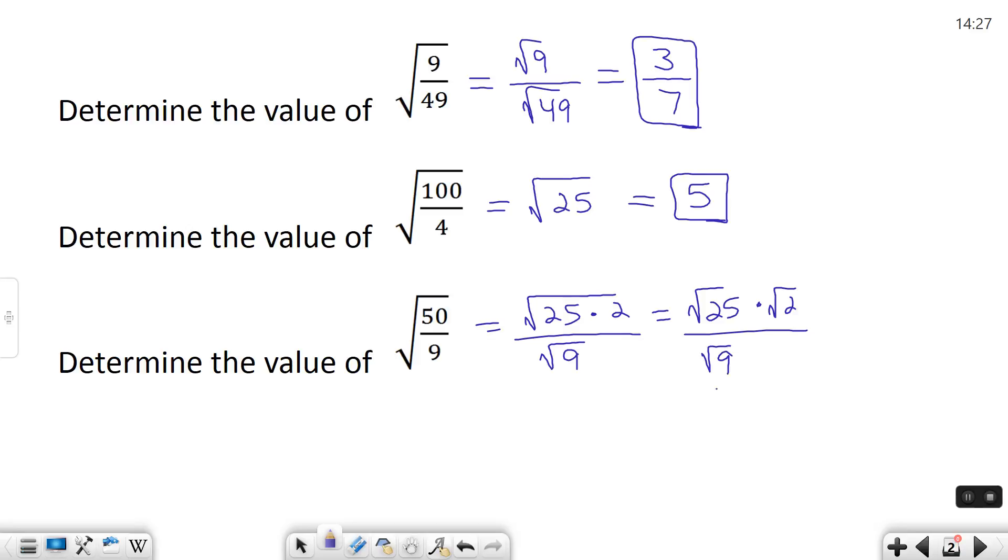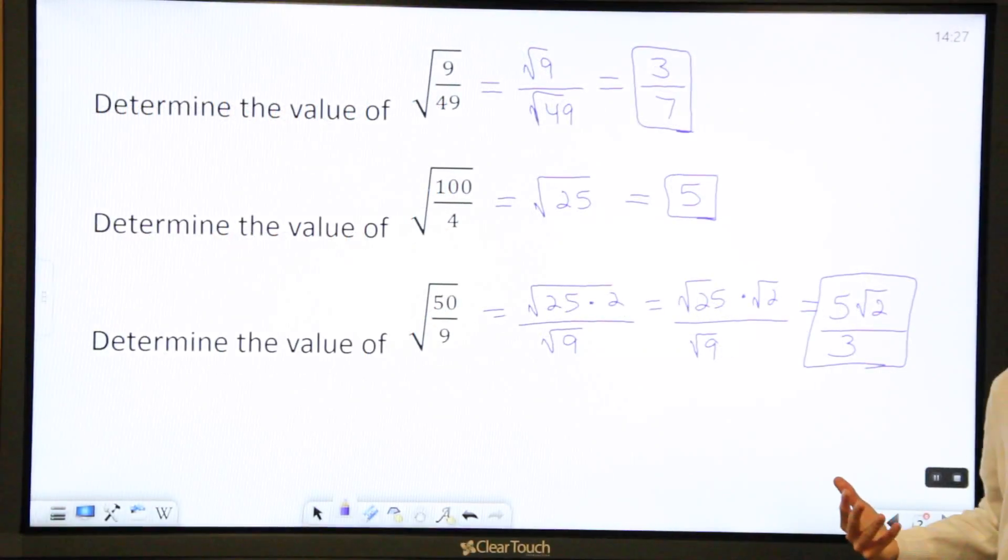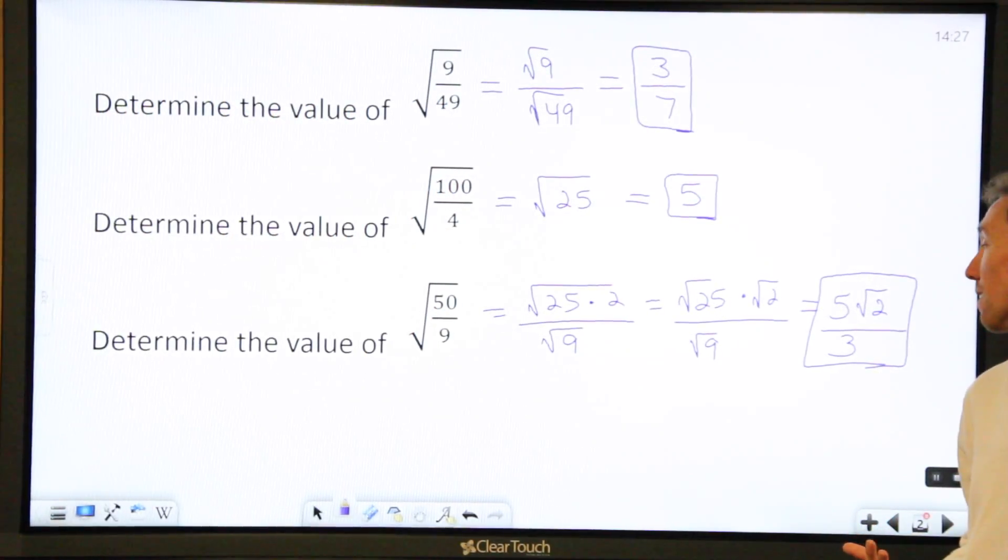And then the square root of 9 we found earlier was 3. So let's go ahead and write all that out. 5 square root 2 over 3. This is actually an okay way to leave your answer. The square root of 2 we can't simplify at all, so we just leave it as it is.